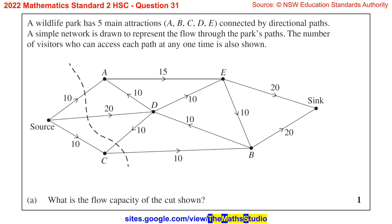Question 31. A wildlife park has five main attractions, A, B, C, D, E, connected by directional paths. A simple network is drawn to represent the flow through the park's paths. The number of visitors who can access each path at any one time is also shown.